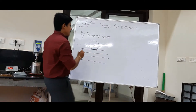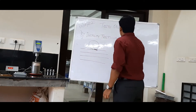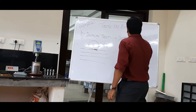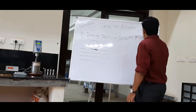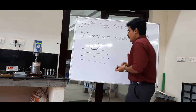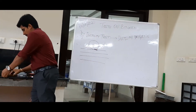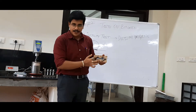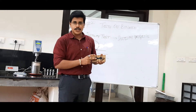For this particular ductility test, we prepare something called a ductility briquette mold — we call it a briquette mold. There is a particular ductility briquette mold shape. We will pour the bitumen into this briquette mold and allow it to condition.